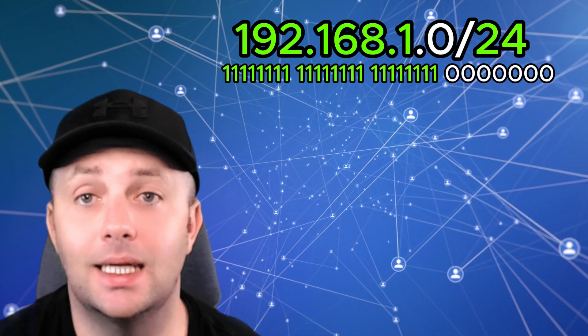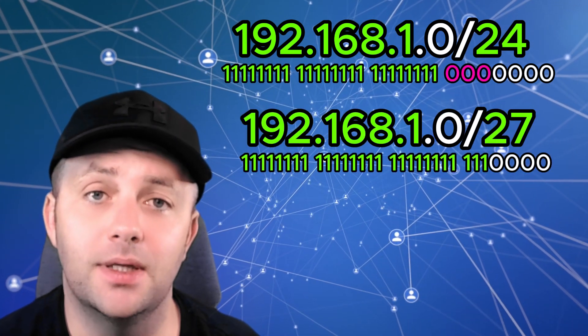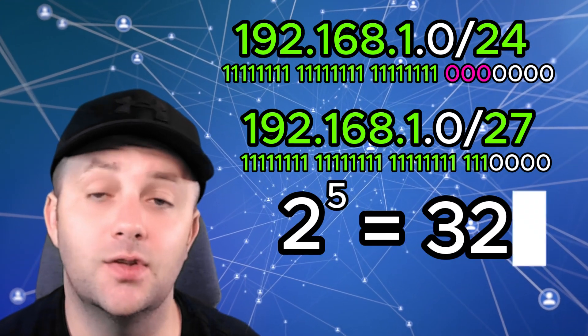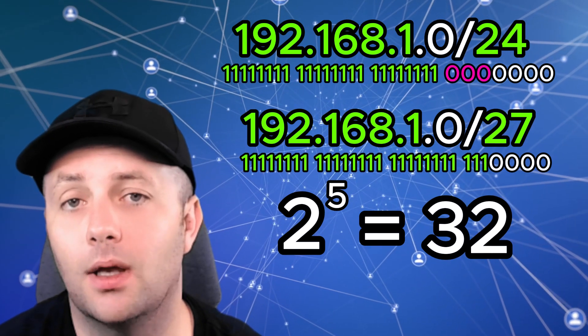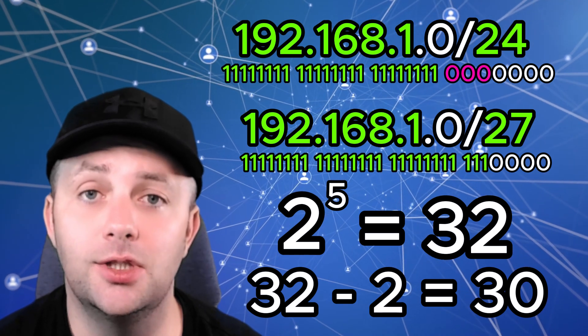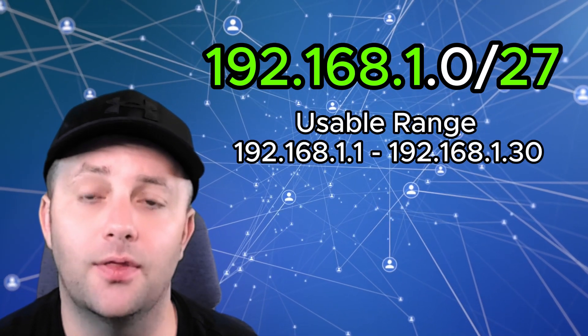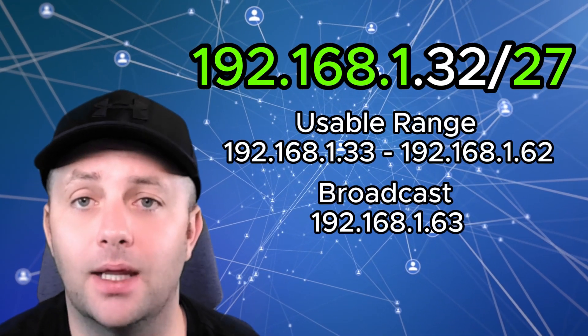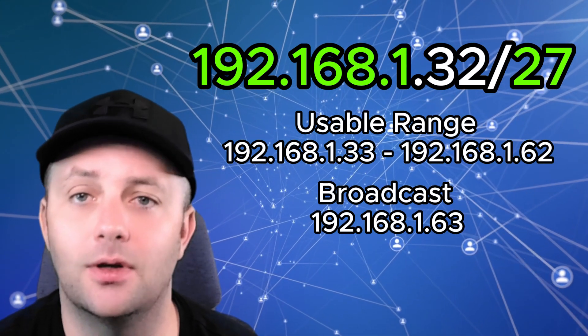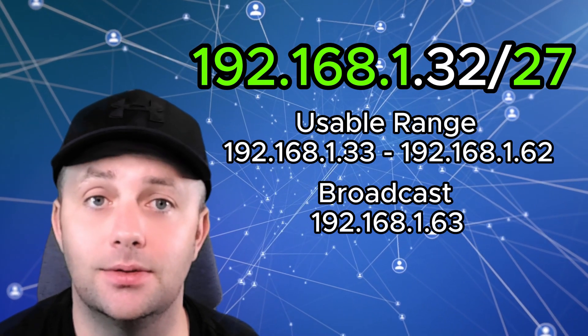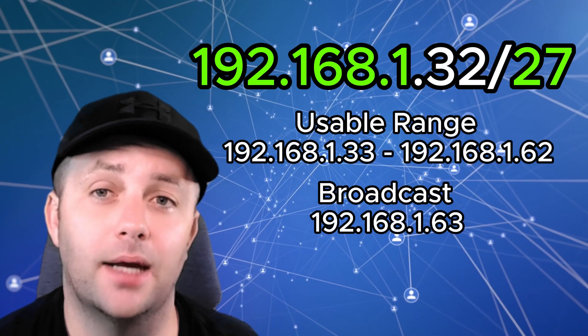Let's go through an example. Suppose you have the network 192.168.1.0/24 and you want to create subnets that each have 30 usable addresses. You'll need to borrow bits from the host portion — borrowing three bits leaves five bits for host addresses. Two to the power of five gives us 32 total addresses per subnet, which includes the network and broadcast addresses, leaving 30 usable addresses. Starting with 192.168.1.0/27, the first subnet has a usable range from 192.168.1.1 to 192.168.1.30, with 192.168.1.31 as the broadcast address. The next subnet starts at 192.168.1.32/27, with a usable range from .33 to .62 and .63 as the broadcast address. You can continue this pattern for additional subnets.